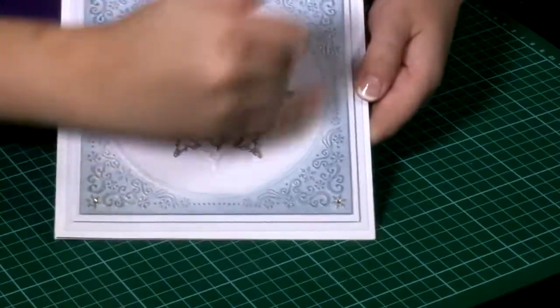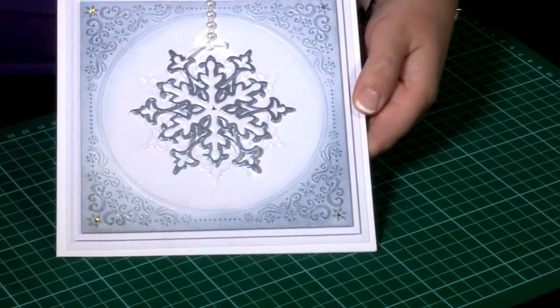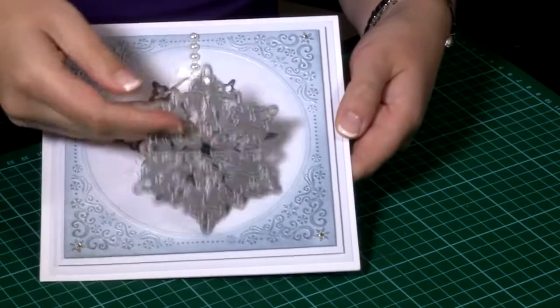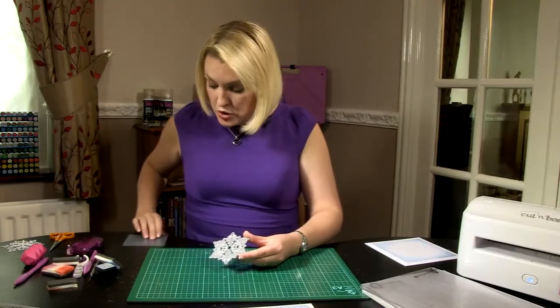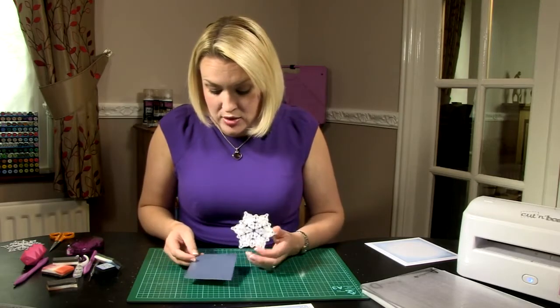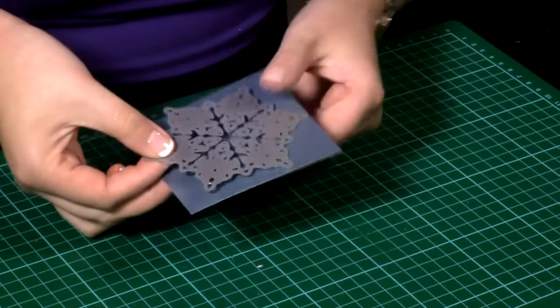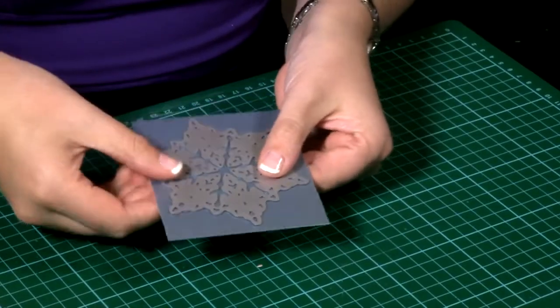So we're going to cut the snowflake design out now. It's actually a two part die, but all in one die cut. This is the snowflake die that we're using. I'm going to cut it first of all onto some blue cardstock. If we want to cut the blue out, we would cut face down into the blue like this.